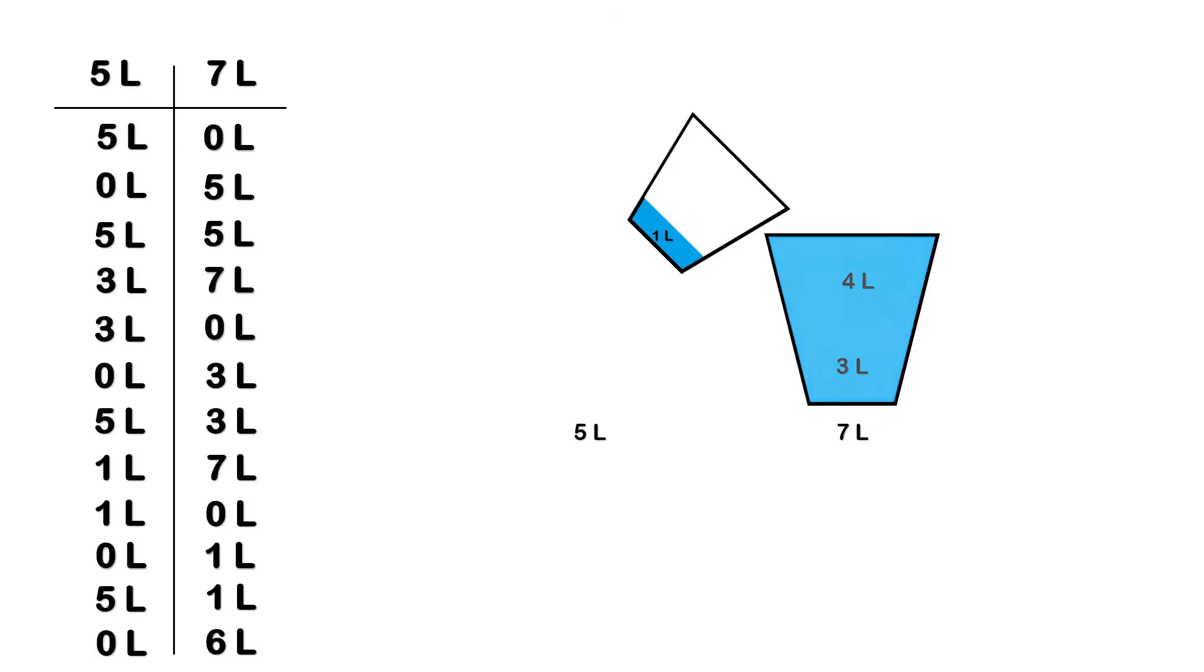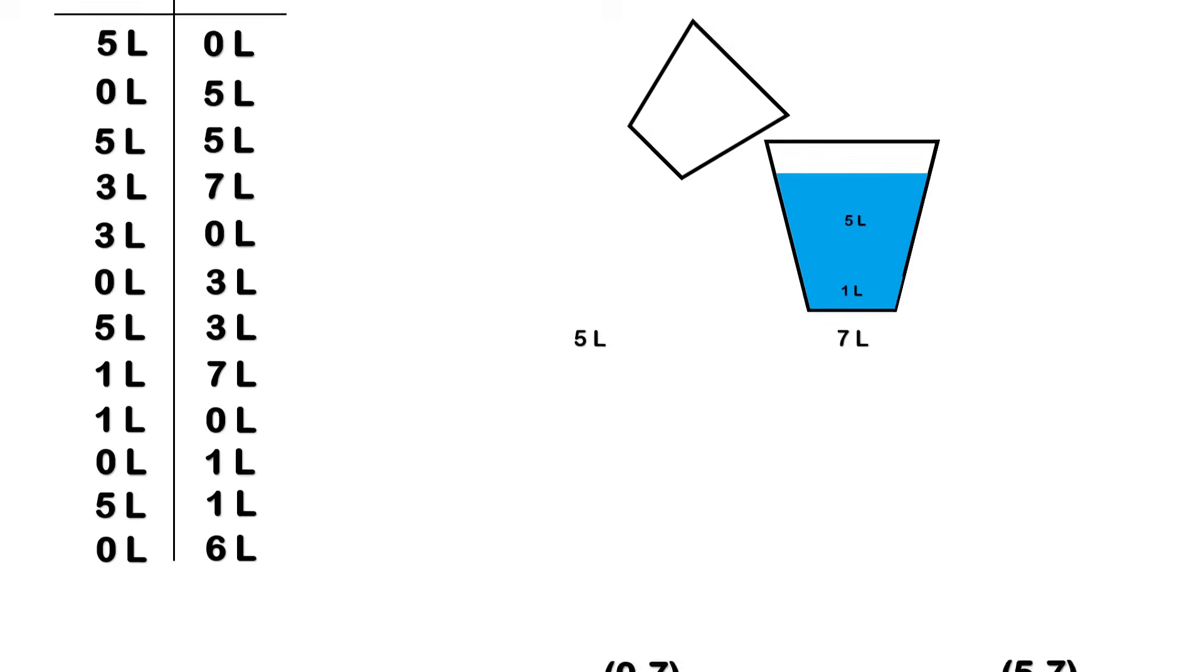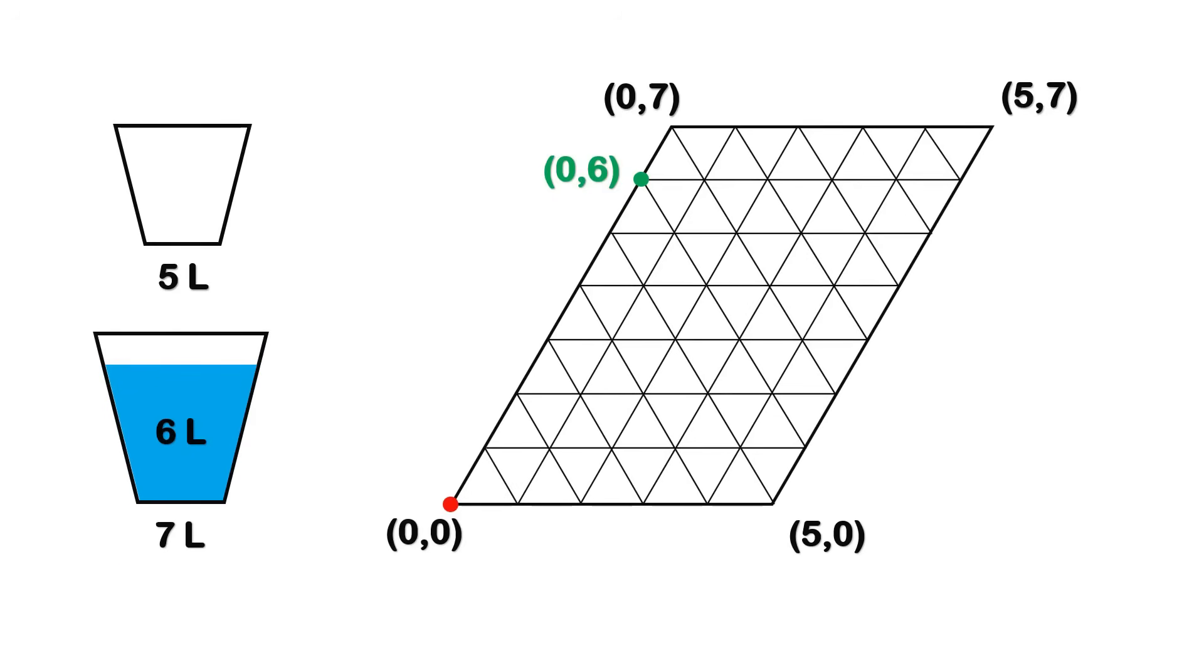Then we empty the 7-liter bucket again, reaching (1,0). We pour that 1 liter into the 7-liter bucket, reaching (0,1). Finally, we fill the 5-liter bucket one more time, reaching (5,1). And as the last move, we pour all the water from the 5-liter bucket into the 7-liter bucket. And that's it. When we reach the point (0,6), the 5-liter bucket is empty, and the 7-liter bucket contains exactly 6 liters of water. No guessing and no trial and error.